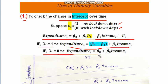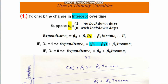When D1 equals 0 — representing lockdown days — beta-1-cap drops to zero, so the estimated equation becomes simply beta-naught-cap plus beta-2-cap times income. This means we are comparing two intercepts: one for lockdown days and one for no-lockdown days. Beta-naught-cap plus beta-1-cap represents the minimum expenditure — for a month or a day — and whether it increases or decreases during no-lockdown days.